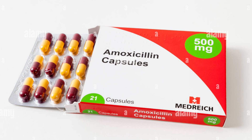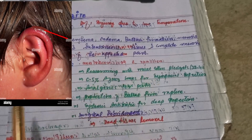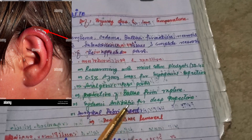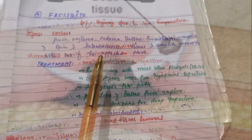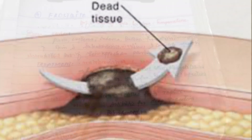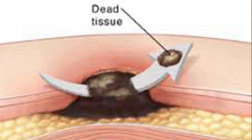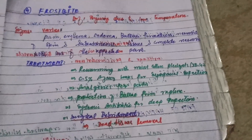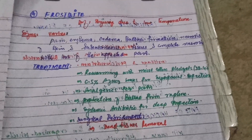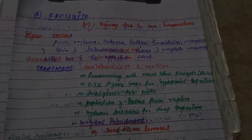In cases of bulla formation, rupture of the bulla should be prevented. For surgical treatment, if there is necrosis of the auricle, surgical debridement is required, in which the necrotic tissue is removed surgically. This was all about frostbite injury of the auricle. For more videos, please subscribe, like, and share.